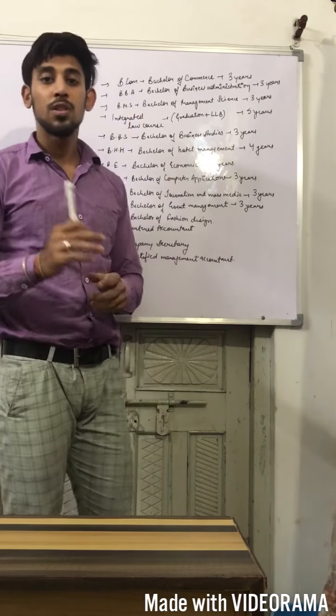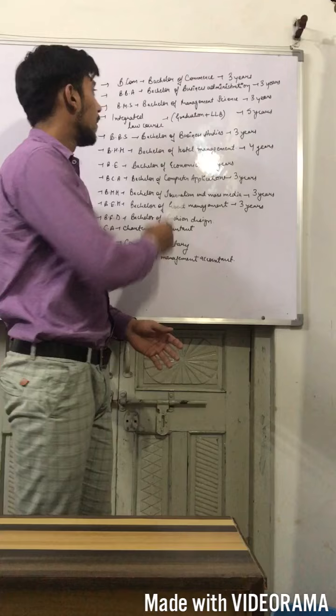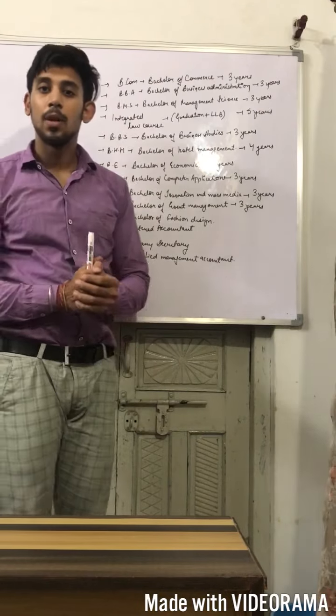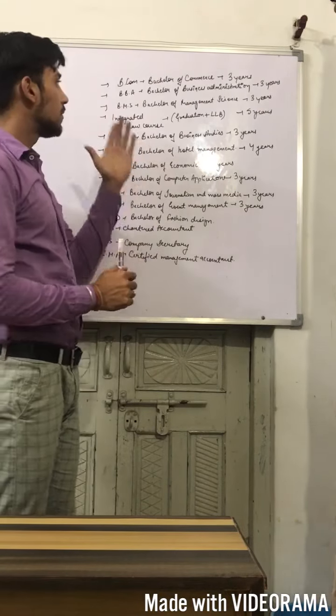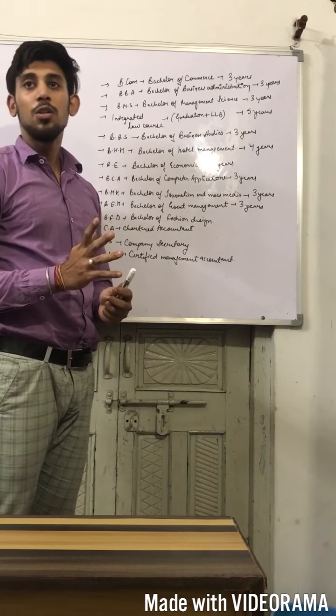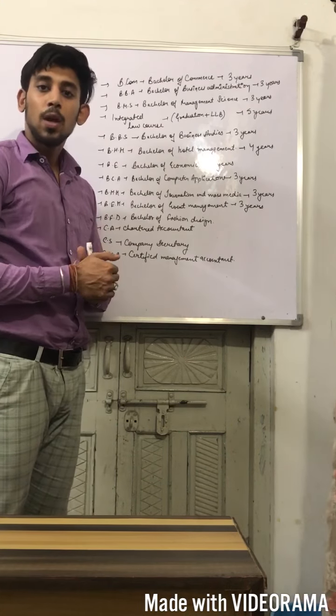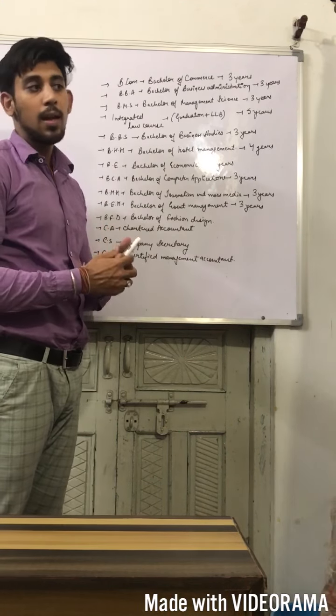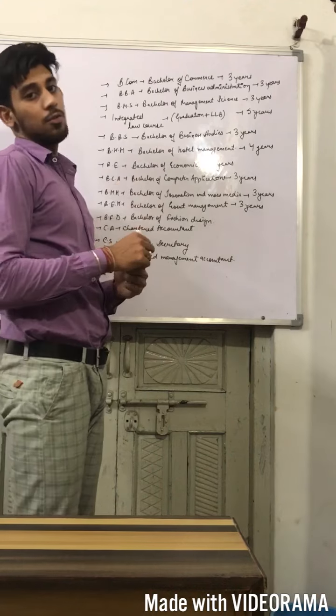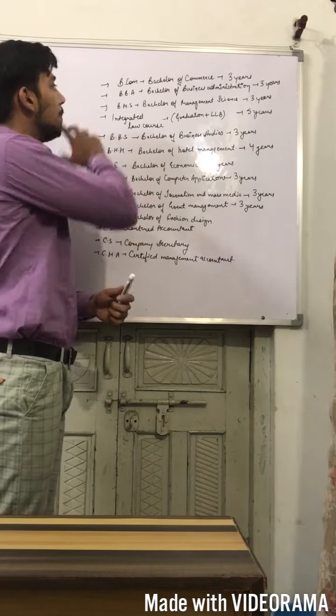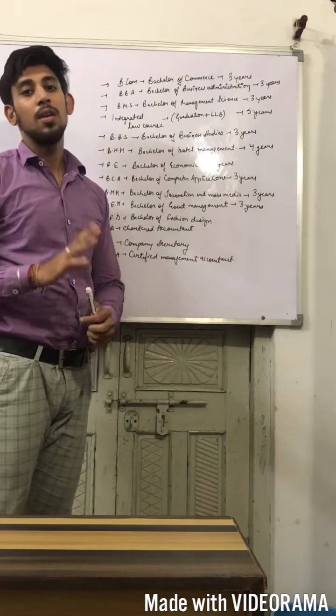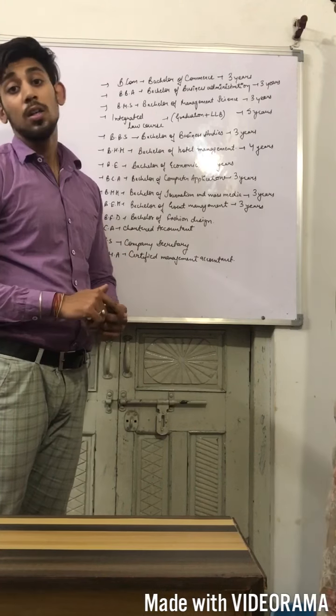So, the first course that I am going to talk about is BCOM. Number 1 is BCOM. It stands for Bachelor of Commerce. Basically, it's a three year duration course, and after it you will go for master's. The number 2 course is BBA, Bachelor of Business Administration. This is also a very good degree. Either you should opt for BCOM or for BBA.